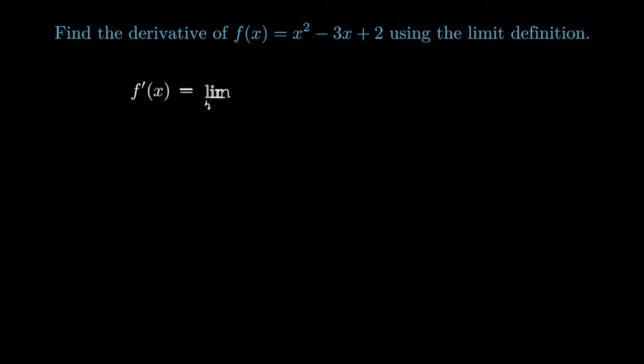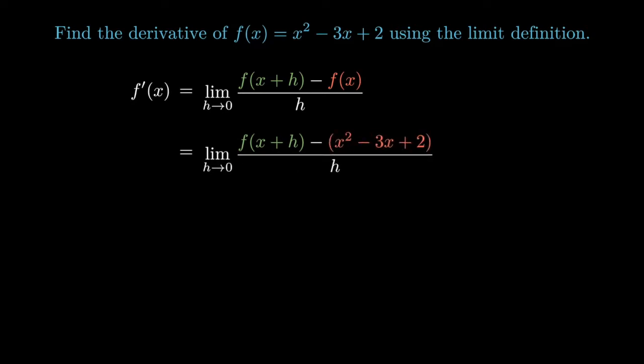To find the derivative of x² - 3x + 2, we evaluate the limit as h goes to 0 of the difference quotient. The difference quotient is f(x + h) - f(x) over h, and we make the appropriate substitution.